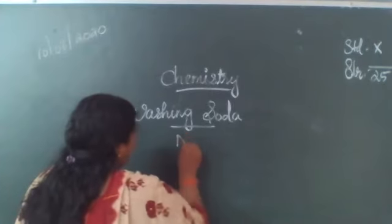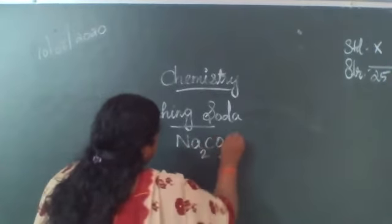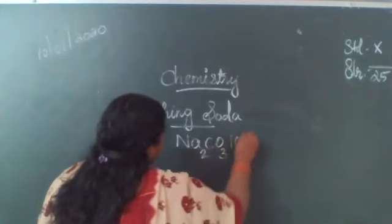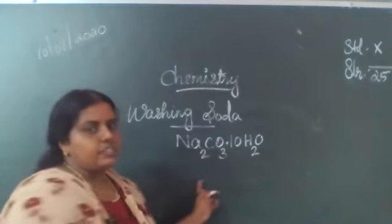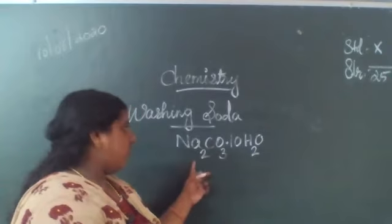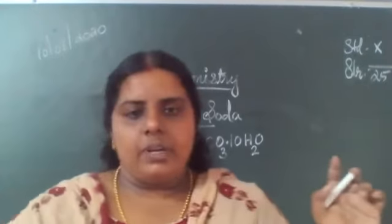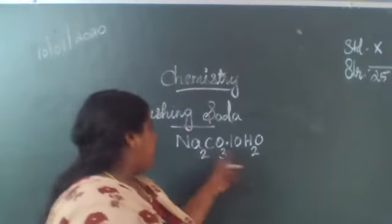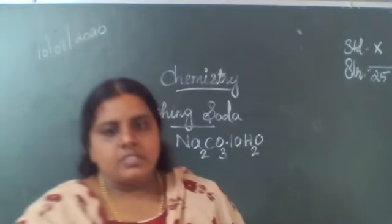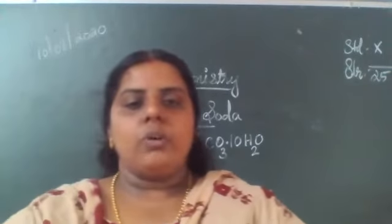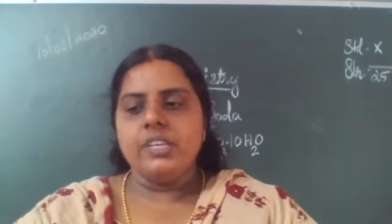Its formula is Na2CO3·10H2O. Na2CO3·10H2O — this is the formula of washing soda. Sodium carbonate with 10 molecules of water; that is the formula of washing soda.